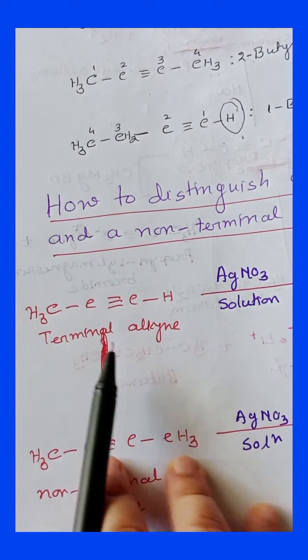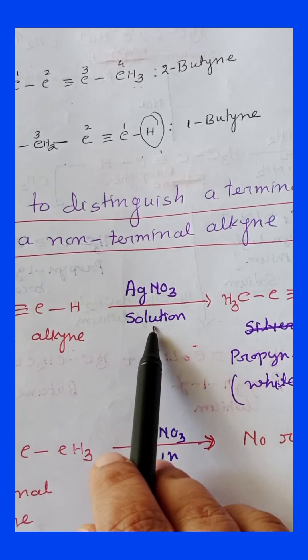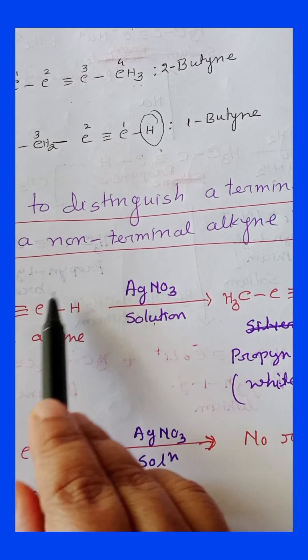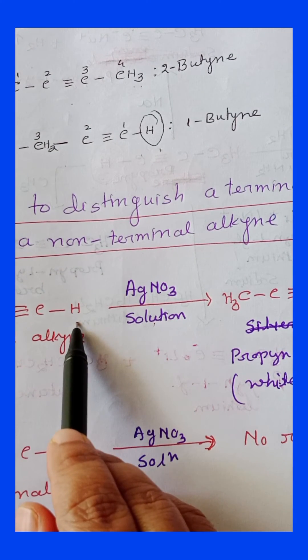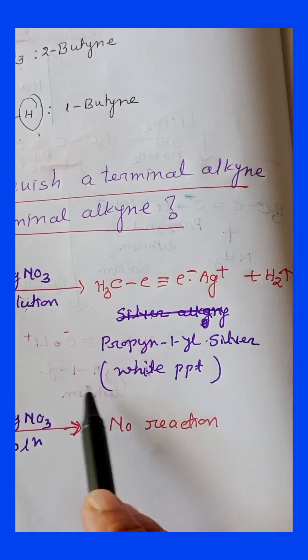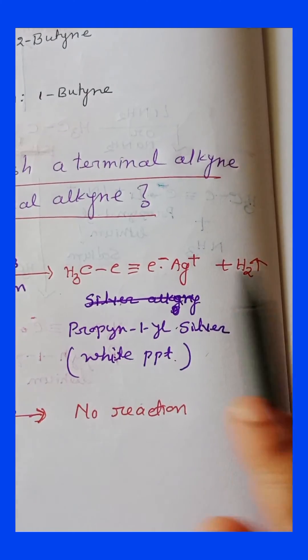So this is a terminal alkyne. When we use silver nitrate solution, this acidic hydrogen gets replaced with the silver and we get propyne vinyl silver as a white precipitate and hydrogen gas as a byproduct.